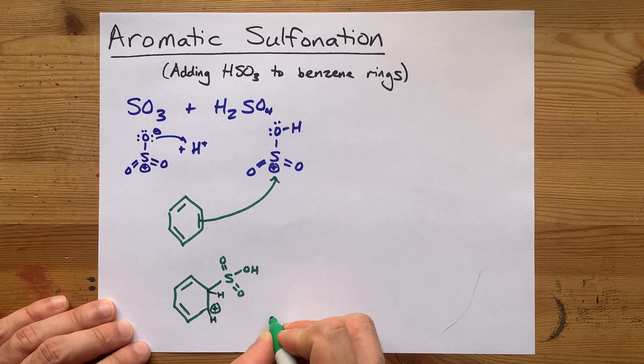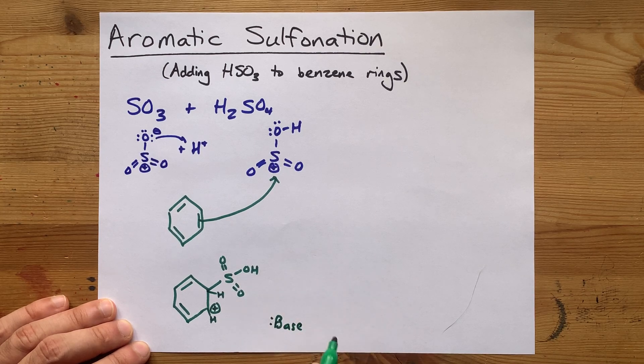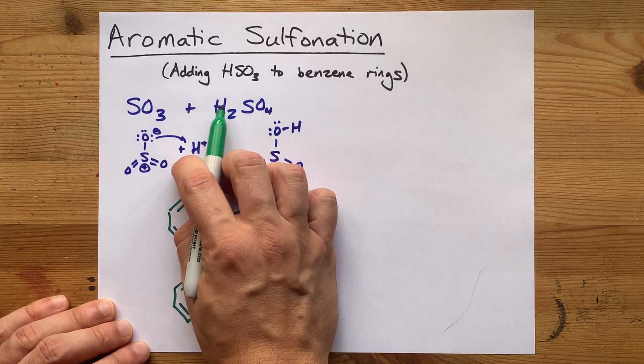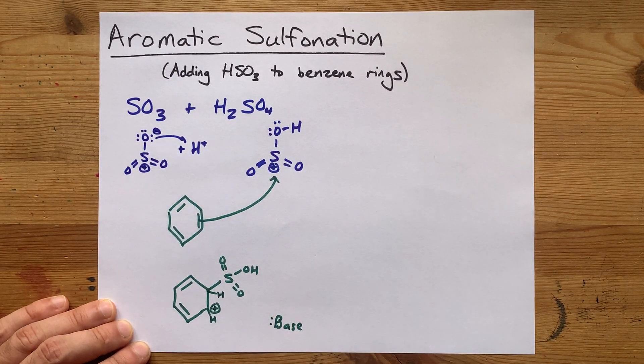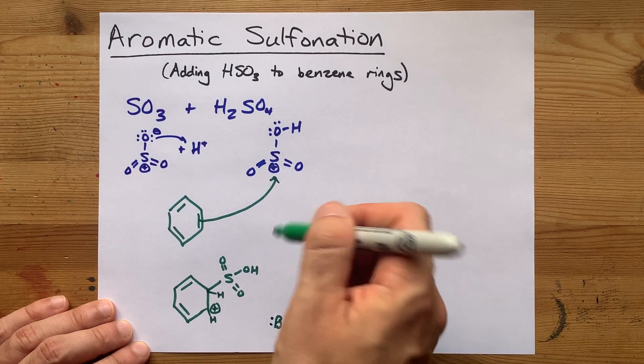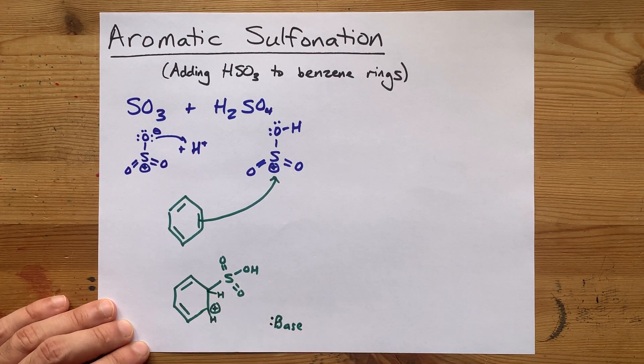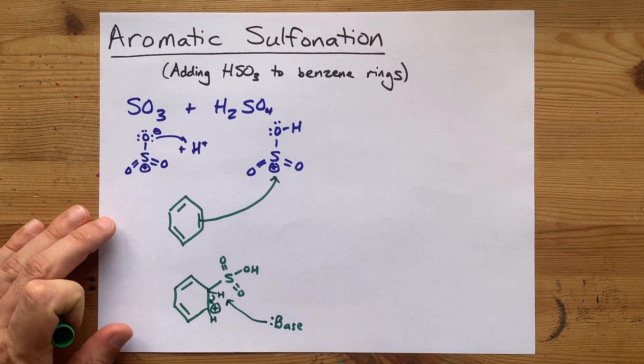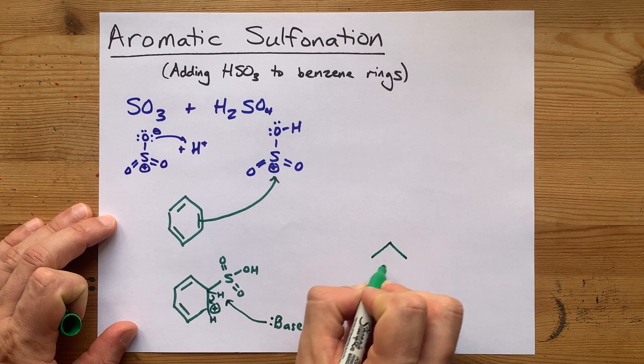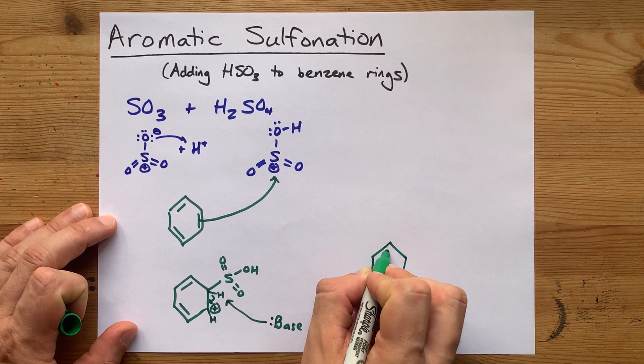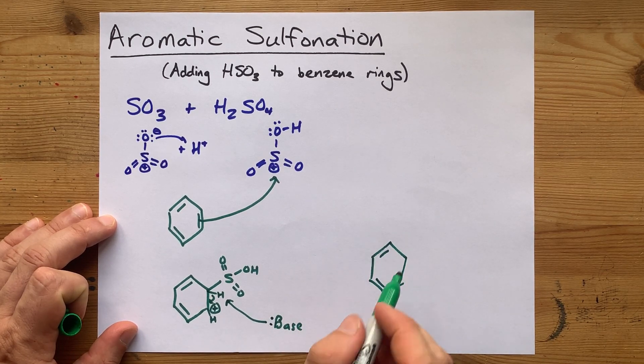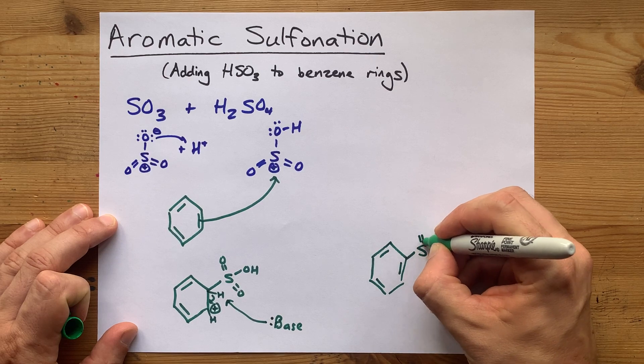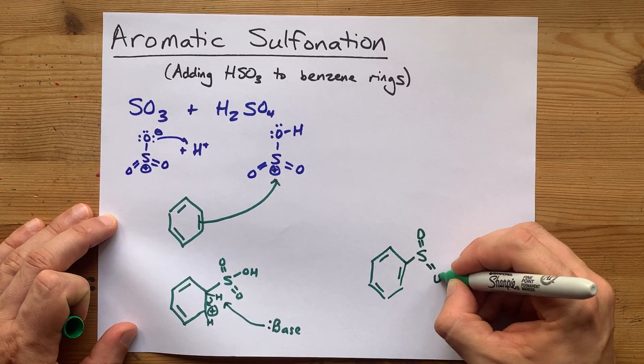All it takes is the presence of any base. The HSO4- that was produced here does not count because it's a weak acid, but almost any other base can steal that H away. Those electrons will return to the double bond from whence they had come, and you'll end up with this benzene. Those two bonds stay intact. You have reconstituted the double bond there, and in the process added on this sulfonyl group.